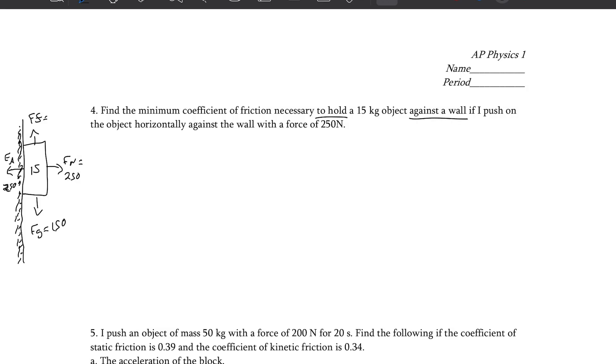Friction always acts in the opposite direction of motion. They want to know the coefficient of friction. So we know friction is equal to coefficient times force normal. Divide force normal to the other side. 150 divided by 250 should be 0.6 is our coefficient of friction.